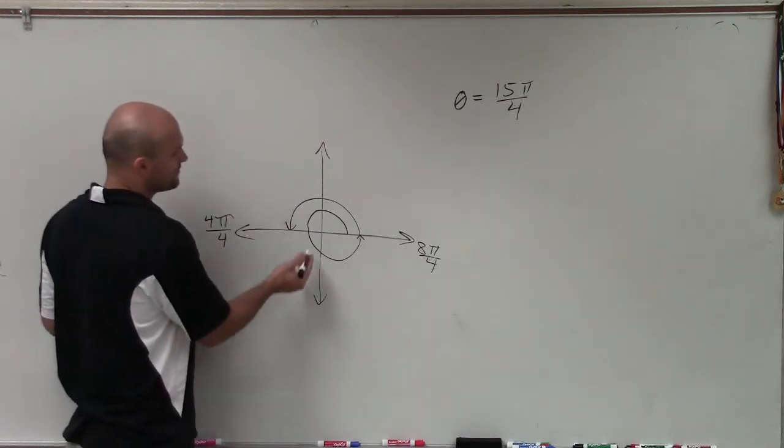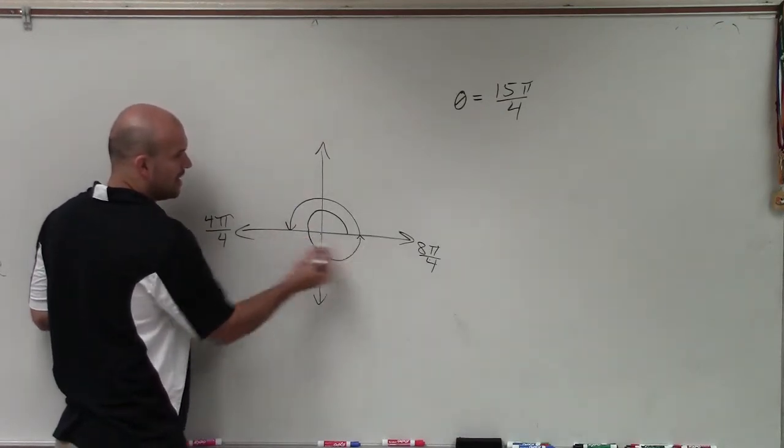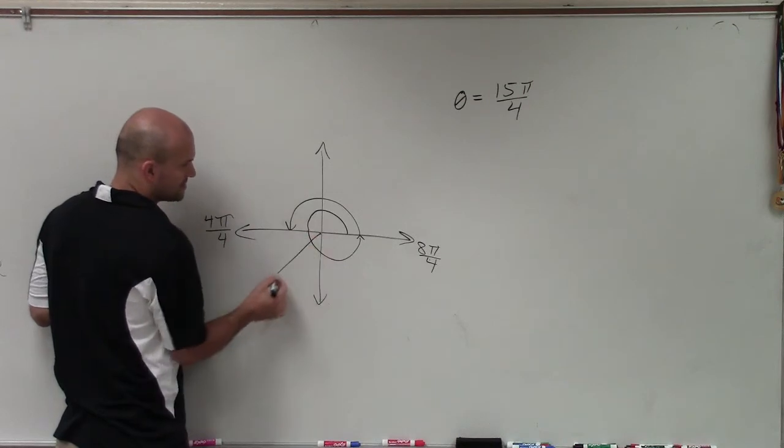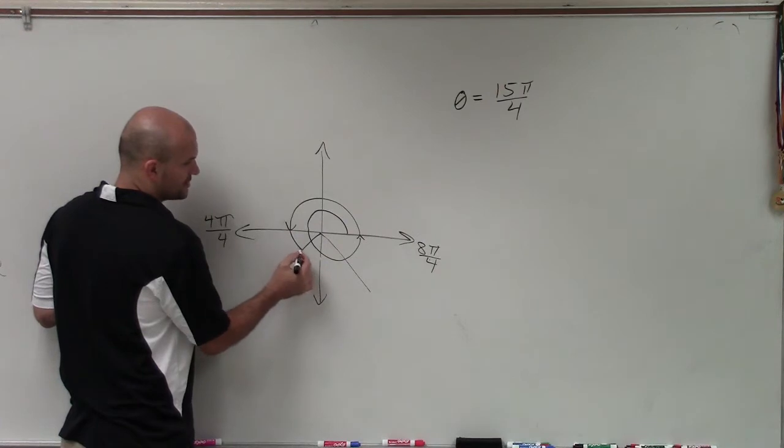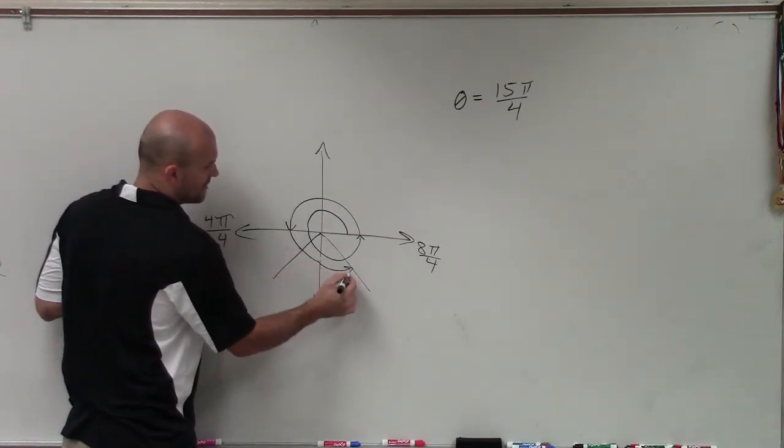And then if I break this up into fourths, 12 pi, I'll have 13 pi over 4, 14, and 15 pi over 4.